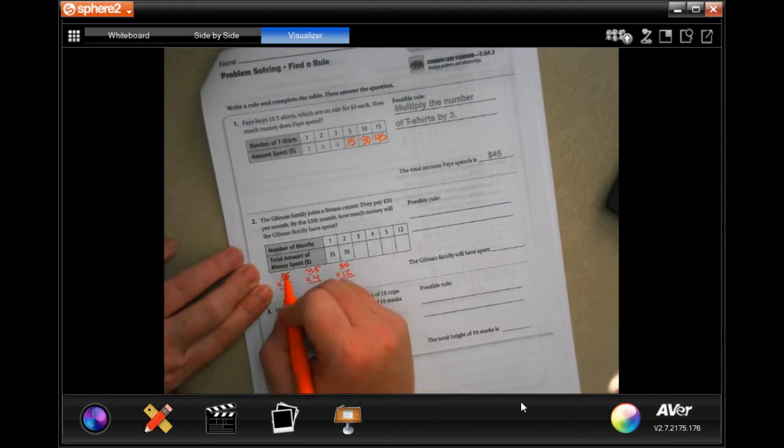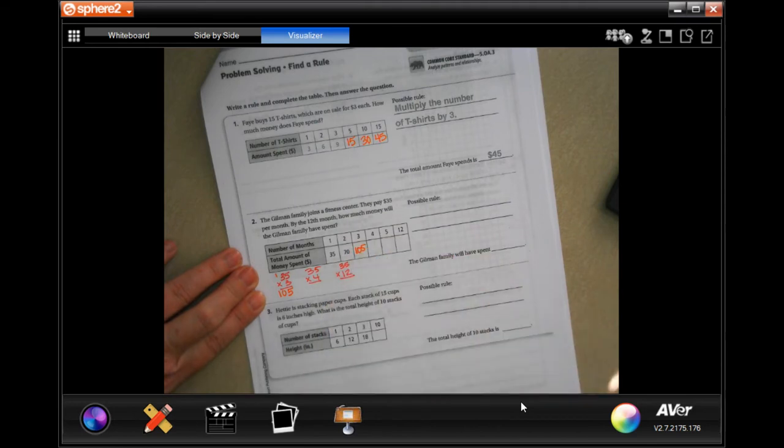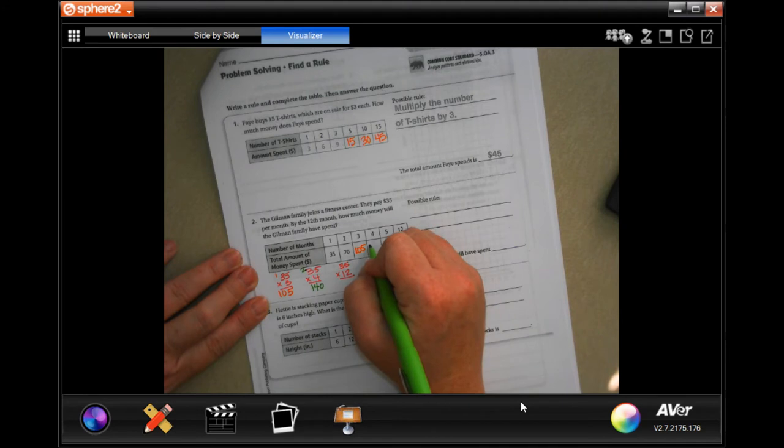So 3 times 5 is 15, carry the 1. 3 times 3 is 9 plus 1 more is 10, so 105. All right, 4 times 5 is 20, carry the 2. 4 times 3 is 12 plus 2 more is 14, so 140.